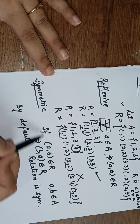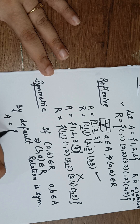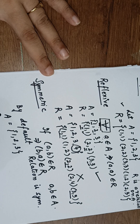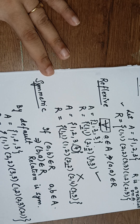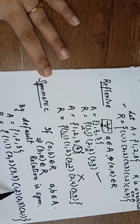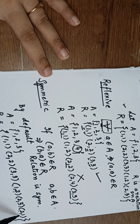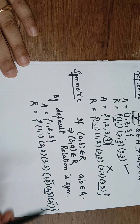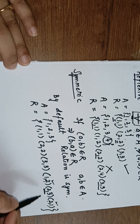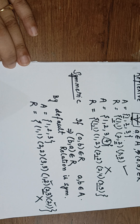Let us take set A = {1, 2, 3} with relation R containing (1,1), (2,2), (3,3), (1,2), and (2,3). We can see that 1 is related to 2, and 2 is related to 1 — that is fine. But we also have (2,3), and we do not have (3,2) in the relation. So this relation is not symmetric.